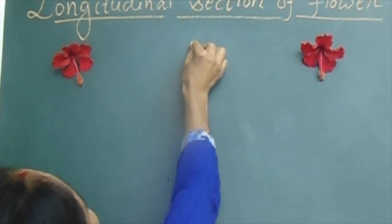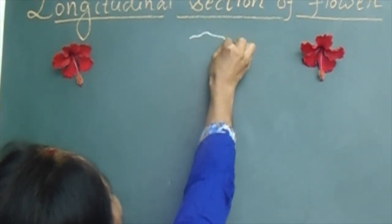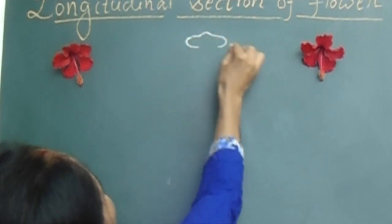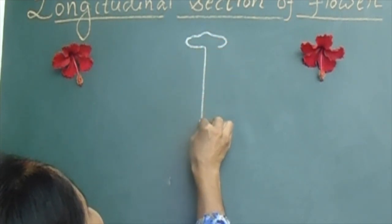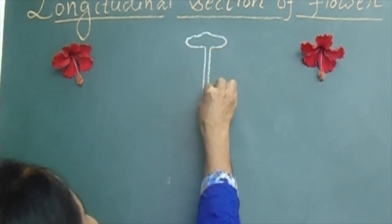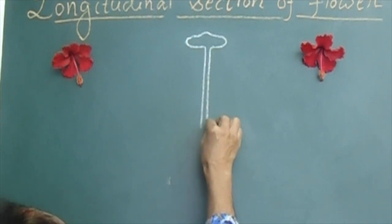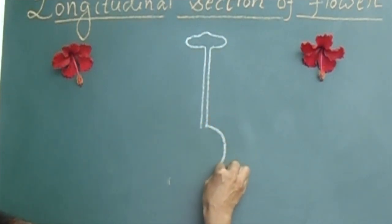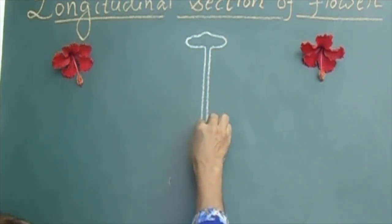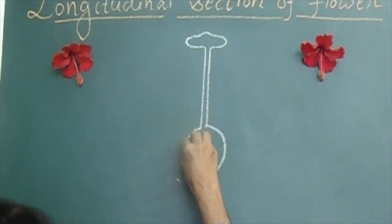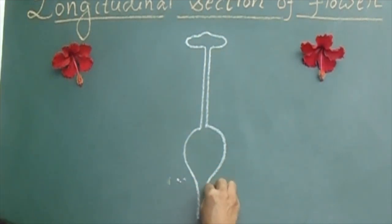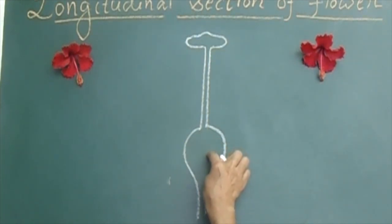We will start from the upper region. It's very simple. Come in this way, come straight down, pull down and then draw a bulged structure here. This bulged structure, we call it as ovary.